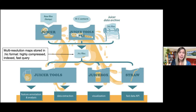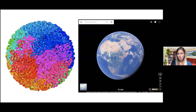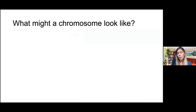Hi-C files are multi-resolution maps stored at varying resolutions — typically 2.5 megabases down to 5,000 or 1,000 base pairs. It's a highly compressed, indexed format allowing fast query and rapid random access. A useful metaphor for Juicebox — our way of visualizing Hi-C contact maps — is Google Earth. Different features are visible at different resolutions, just like zooming into Google Maps: at genome-wide scale you might see the chromosomes, equivalent to continents, and then you zoom in to see progressively finer features.